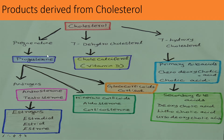All these are synthesized from cholesterol. From cholesterol, we also get 7-dehydrocholesterol, from which we can derive vitamin D3. The active form of vitamin D, cholecalciferol, is also derived from cholesterol.